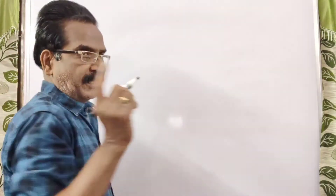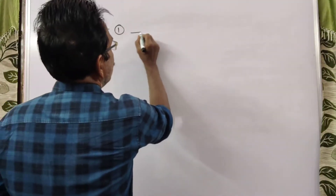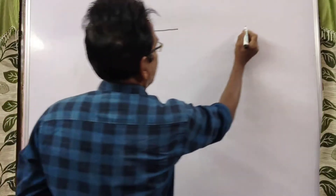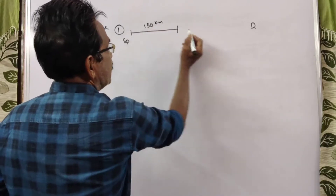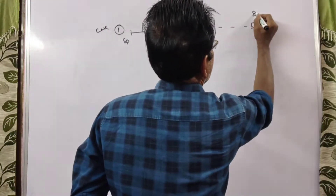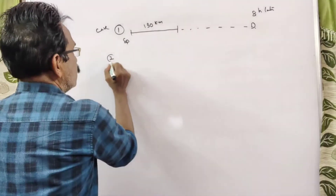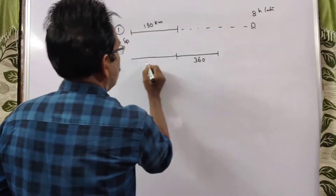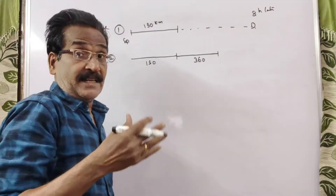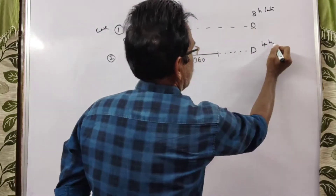Then what is the distance travelled by the train? In Case 1, this is the starting point and this is the destination. If the accident occurred after 150 km, it reaches 8 hours late. In Case 2, if the accident occurred after 360 km more, it is late by just 4 hours.